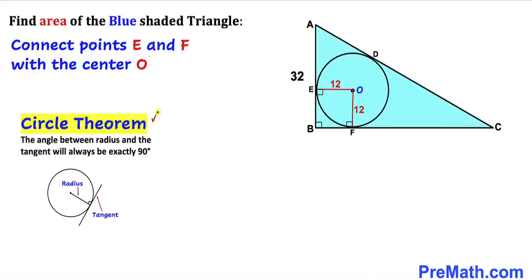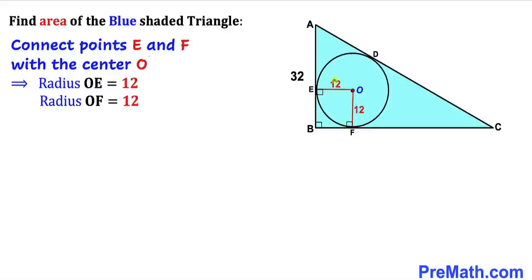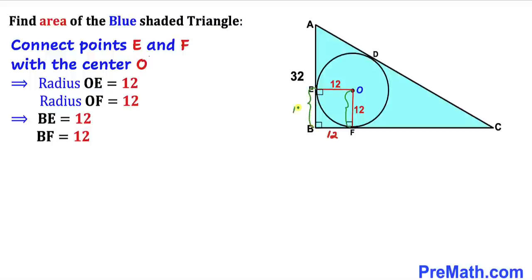Now let's recall this circle theorem. According to this theorem, the angle between the radius and the tangent will always be equal to 90 degrees. So therefore this angle and this angle are each 90 degrees. OE and OF are the radii of this circle, which is 12. So therefore BE and BF each turn out to be 12 units.